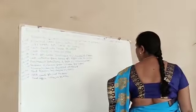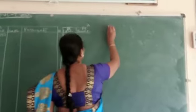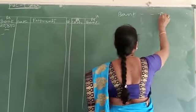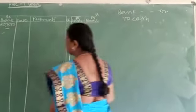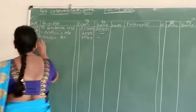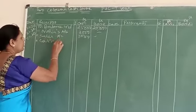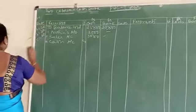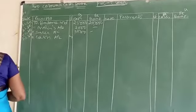Cash paid into bank is a contra entry. When you pay the cash into the bank, the entry is bank account debit to cash account. So bank account is debit. Come to the debit side of the bank account, write cash account, write it as C1, use the contra mark C1, and write the amount 4,000.